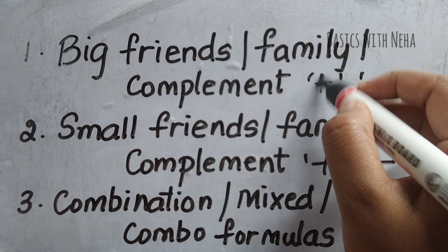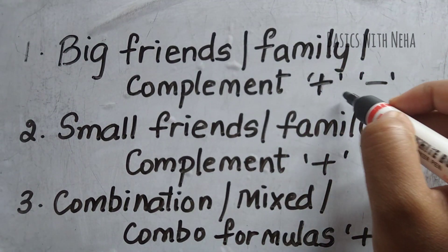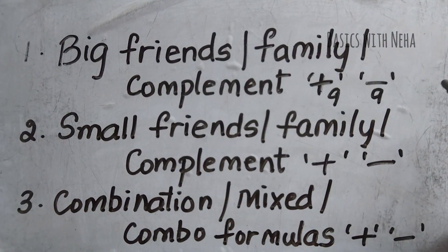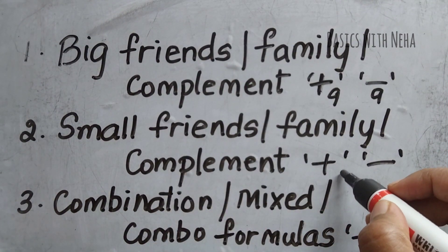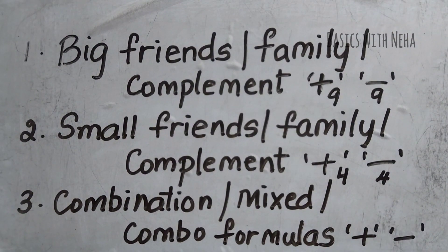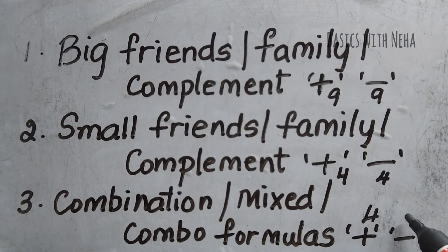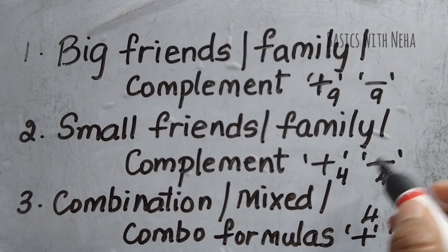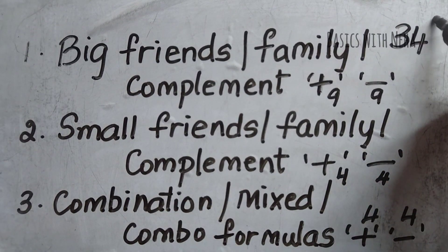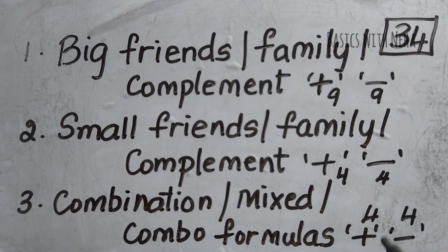In positive big friends formulas, we have nine formulas; in negative, nine formulas. In small friends, we have four positive and four negative formulas. In combination or mixed formulas, we have four formulas in positive and four in negative. That makes a total of 34 formulas. So in Abacus, we need to understand and learn these 34 formulas.